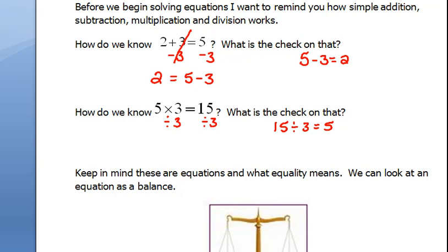We've not created an imbalance. Times 3 divided by 3 undo each other. They're the opposite operations. So we have left 5 is equal to 15 divided by 3, which we knew to be a true statement. The most important thing here is to always remember that the equations have to stay balanced.